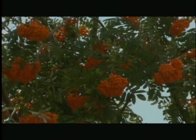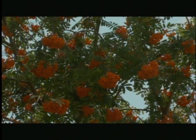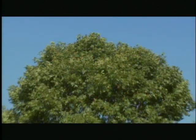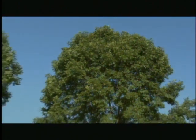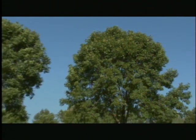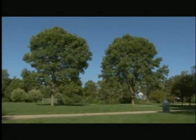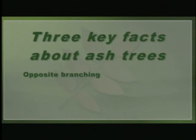All other trees, including one called the mountain ash — which is not a real ash — are safe from this invasive pest. Here's how you can tell ash trees from other common trees. All native ash trees and the various landscape varieties you might have in your yard have three traits in common: opposite branching, compound leaves, and each leaf has 5 to 11 leaflets.